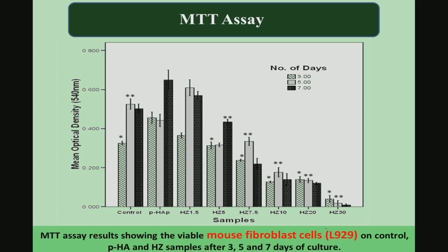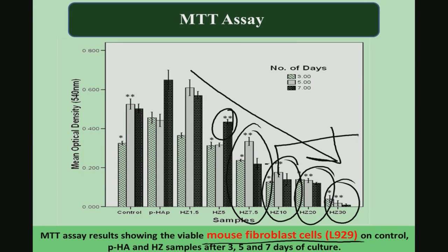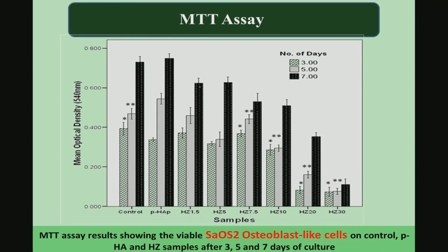For L929 mouse fibroblast cells — connective tissue cells widely used in biomaterials research — there is a progressive, systematic decrease in cell viability as zinc oxide content increases. The most statistically significant results are obtained from 5 percent onwards, and 7.5 and 10 percent are certainly worse, followed by 20 and 30 percent. Therefore, hydroxyapatite-zinc oxide composites should be restricted to up to 5 percent zinc oxide based on fibroblast cell viability.